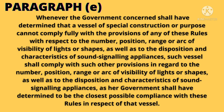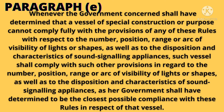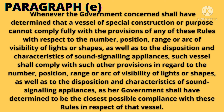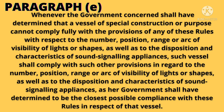Whenever the government concerned shall have determined that a vessel of special construction or purpose cannot comply fully with the provisions of any of these rules with respect to the number, position, range, or arc of visibility of lights or shapes, as well as to the disposition and characteristics of sound signaling appliances, such vessel shall comply with such other provisions in regard to the number, position, range, or arc of visibility of lights or shapes, as well as to the disposition and characteristics of sound signaling appliances, as her government shall have determined to be the closest possible compliance with these rules in respect of that vessel.